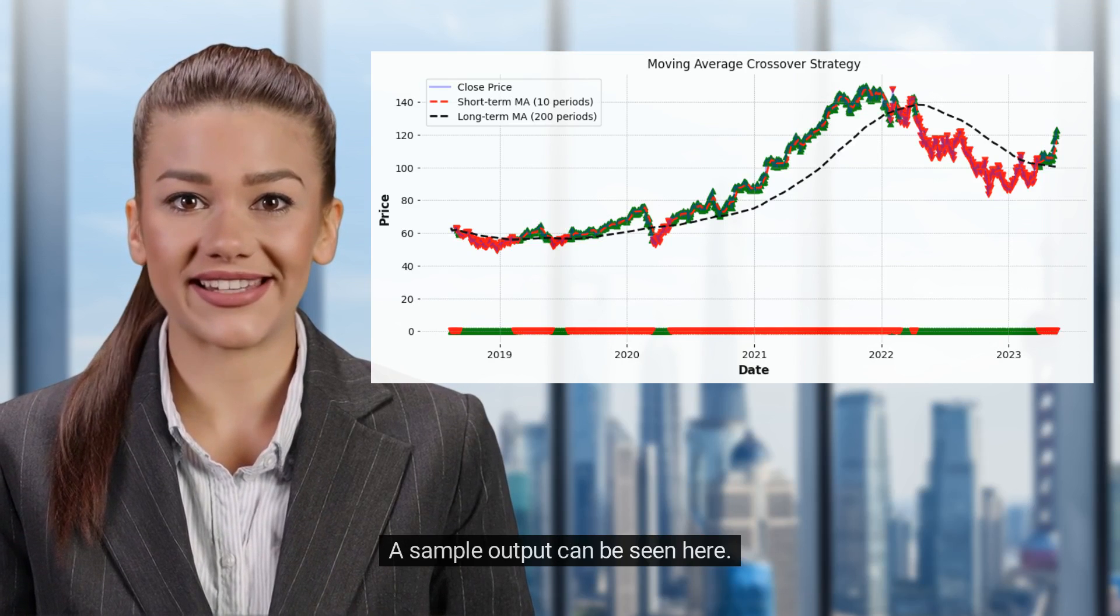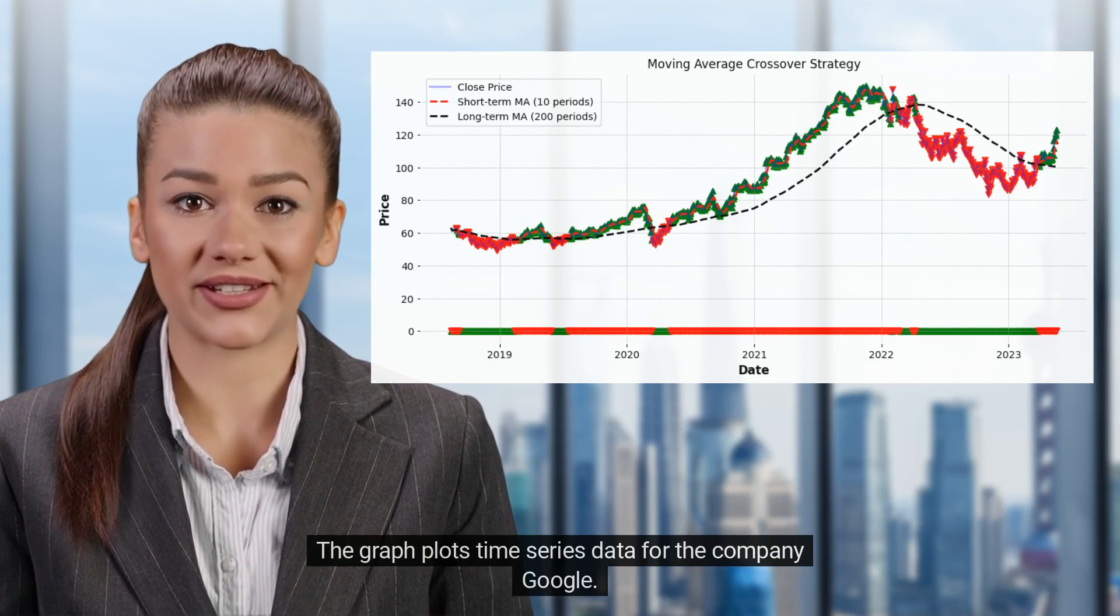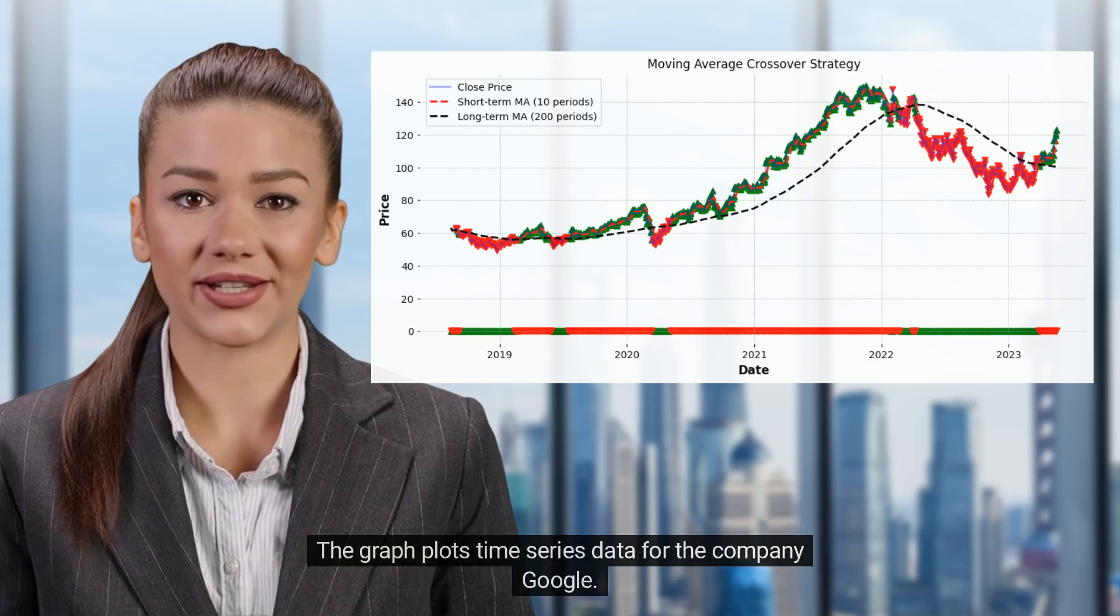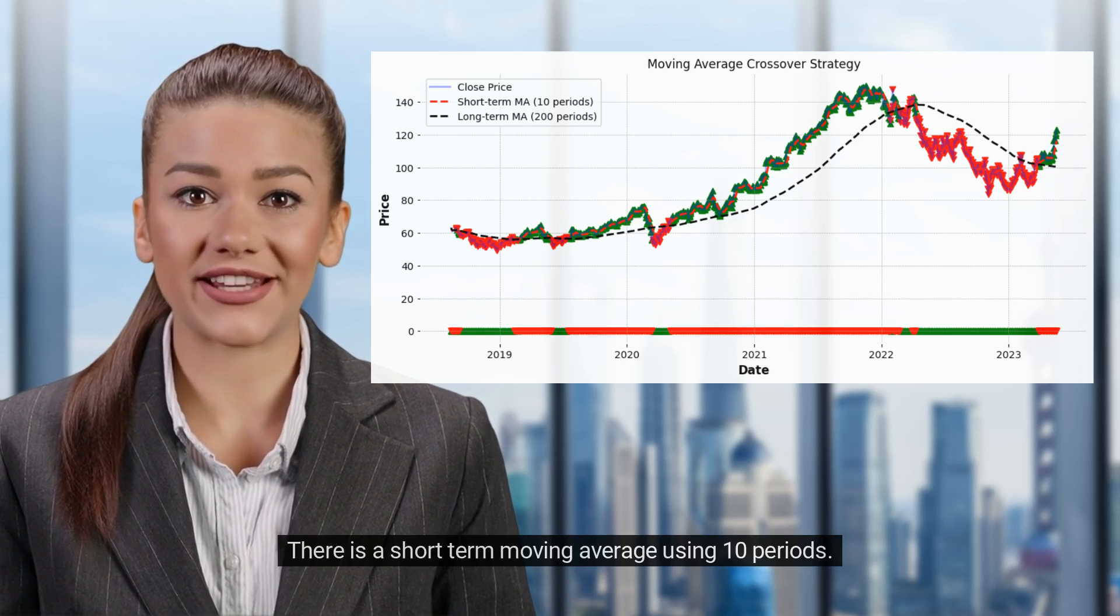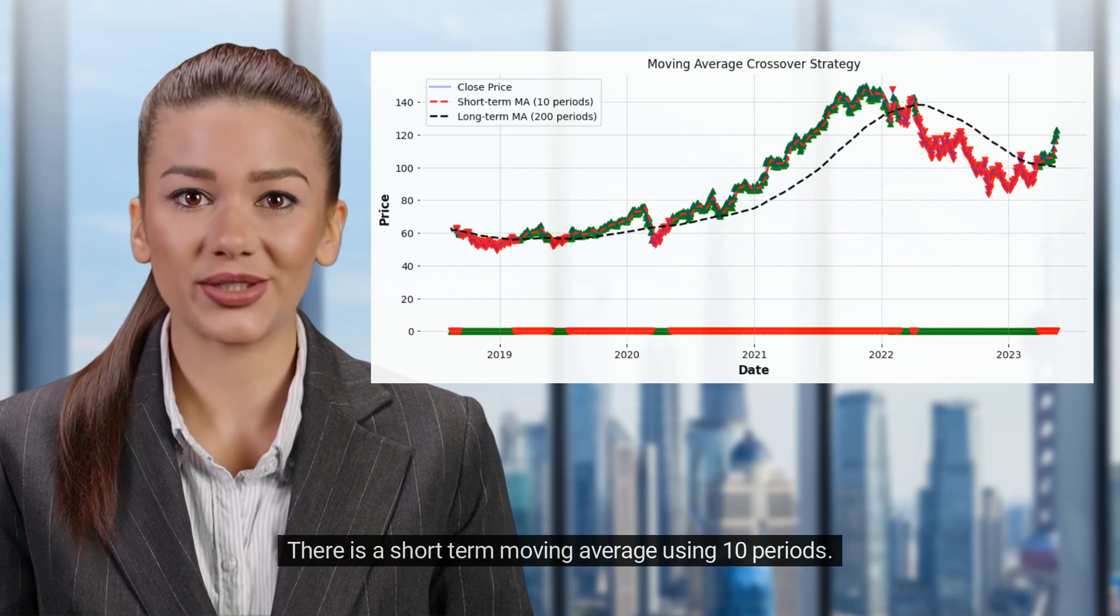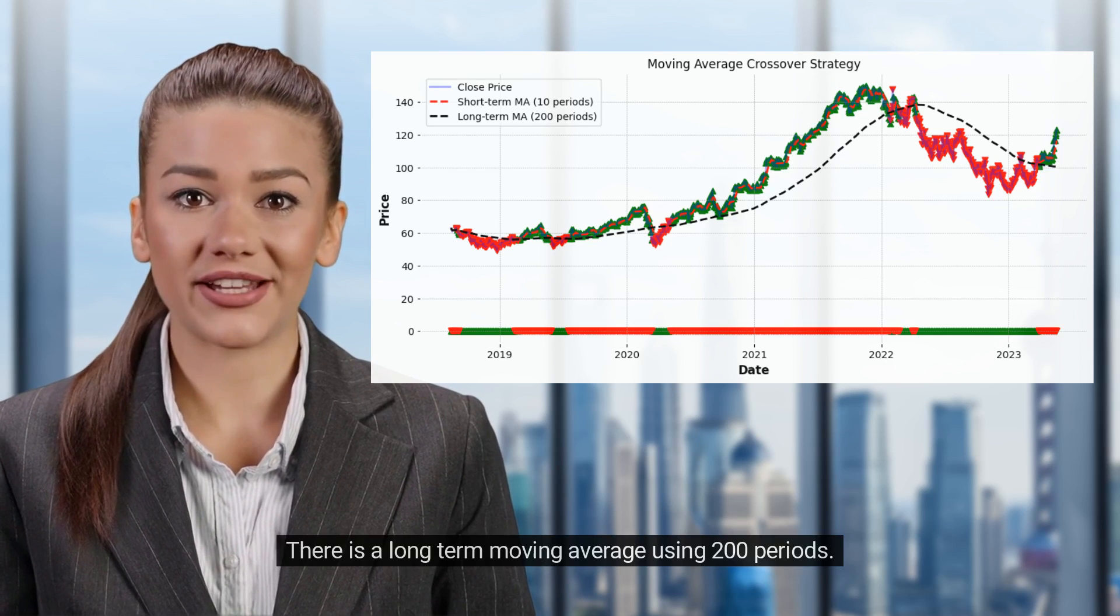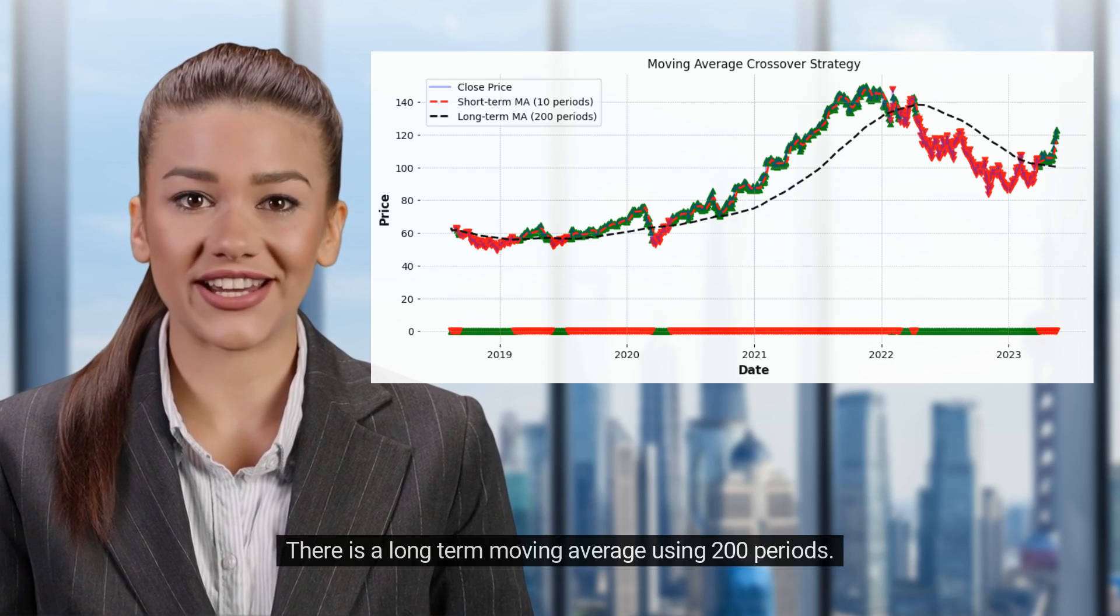A sample output can be seen here. The graph plots time series data for the company Google. There are two moving averages plotted here. There is a short-term moving average using 10 periods. There is a long-term moving average using 200 periods.